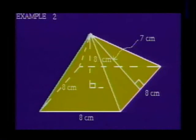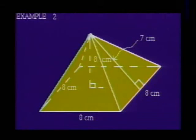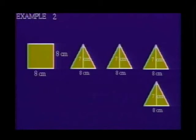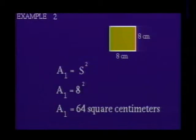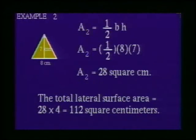Example 2: Find the total surface area of this square pyramid. First, let's identify the shape of each face and calculate the area of each. The base of the pyramid is a square, 8 centimeters on each side. The formula for the area of a square is A₁ = s². Substituting 8 for s, we get A₁ = 8² = 64 square centimeters.